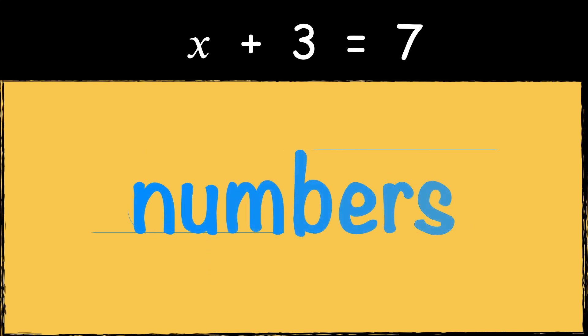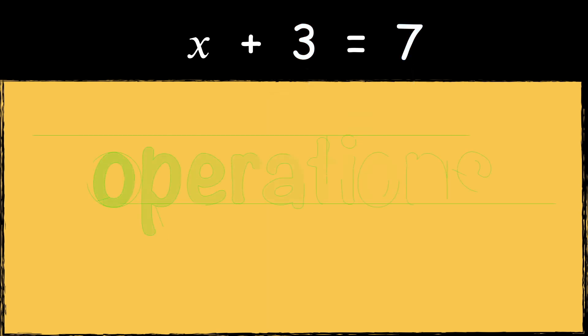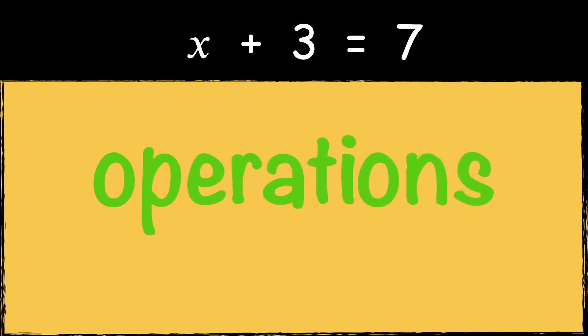Then we have the numbers. In this equation we can see the number 3 and the number 7. Number 3 is a constant, meaning it's a fixed amount added to X. On the right side we have 7, which is the value that the left side should equal when we find the correct value of X. Variables and numbers come together through operations like addition, subtraction, multiplication, and division.